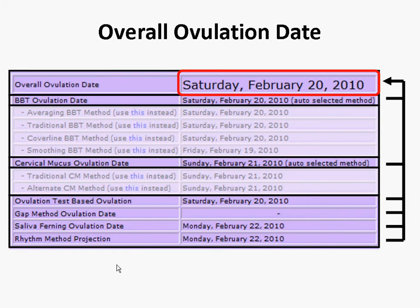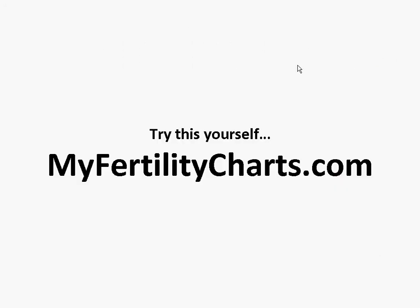Overall, all the ovulation date estimates for the different symptoms are reduced down to a single overall ovulation date shown at the top. The basal body temperature ovulation date selected, cervical mucus date selected, and then the other methods such as ovulation testing, gap method, saliva, and rhythm are all looked at and calculated into this overall ovulation date. To try this out yourself, visit MyFertilityCharts.com — you can sign up for a free account and start using the charting services.